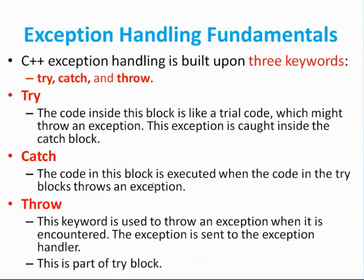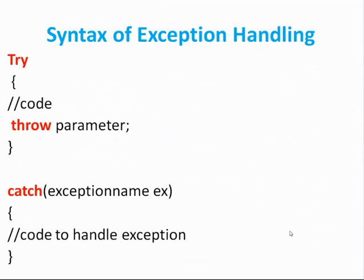In the catch block, the code in this block is executed when the code in the try block throws an exception. The throw keyword is used to throw an exception when it is encountered. The exception is sent to the exception handler, which is the catch block — this is part of the try block. This is the syntax of the exception handler. Here, the try block consists of the throw statement. Once it throws some exception, it will be caught. We are checking the error in the code, or if some wrong input is given, that will be thrown here, and we can handle these runtime errors using the catch block.